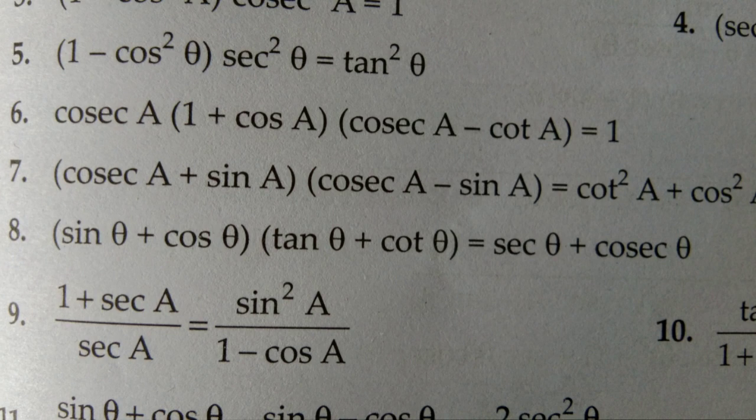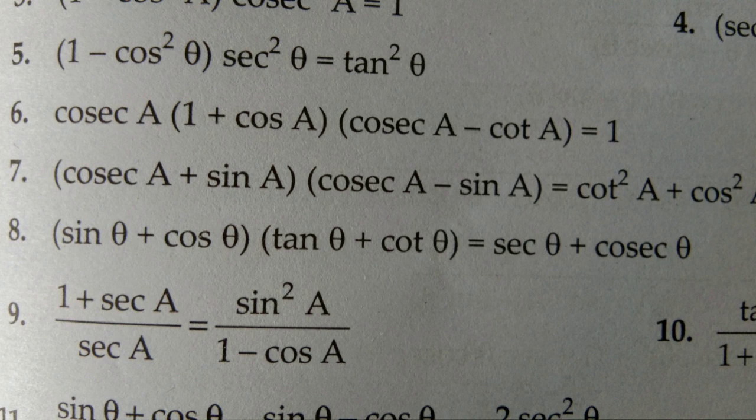In question number seven, you have cosec A plus sin A into cosec A minus sin A. Use the algebraic identity A plus B into A minus B equals A square minus B square, giving cosec square A minus sin square A. Apply the cosec square A formula and substitute sin square A — open the bracket and simplify.